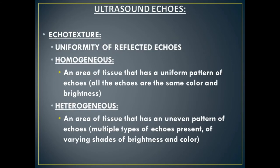Then we also have echo texture, where we look at the uniformity of reflected echoes. We want a mass to be even inside — the same color throughout — with no parts looking different from others. If a mass is all uniform color and brightness inside, we call that homogeneous, meaning all echoes are the same brightness level. The opposite is heterogeneous, meaning there are multiple different brightness levels within the mass, with parts darker and parts brighter. Complex masses are heterogeneous because they have multiple different types of brightness inside.